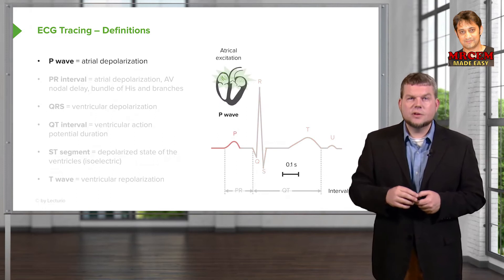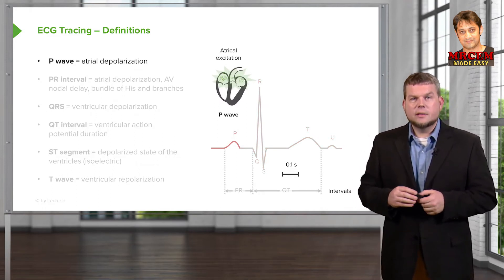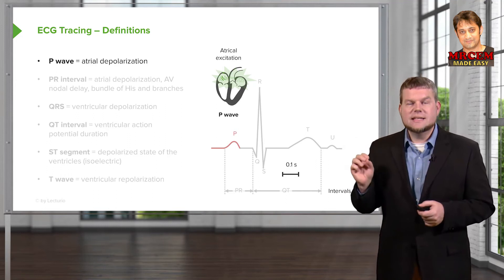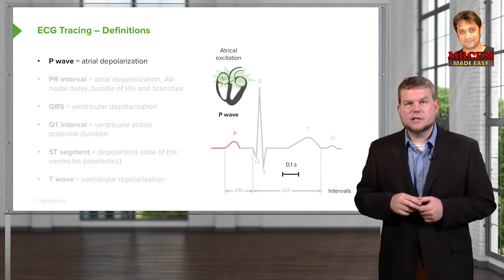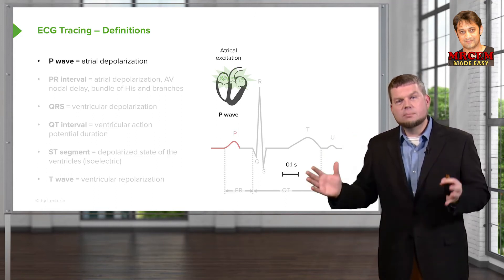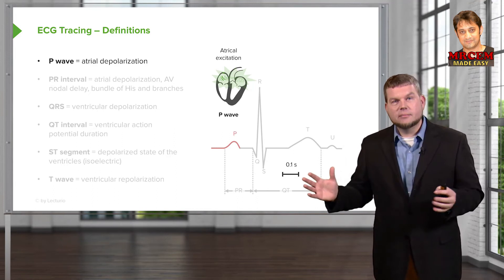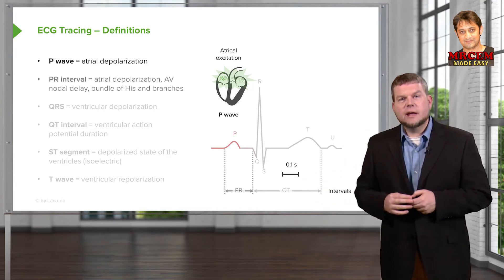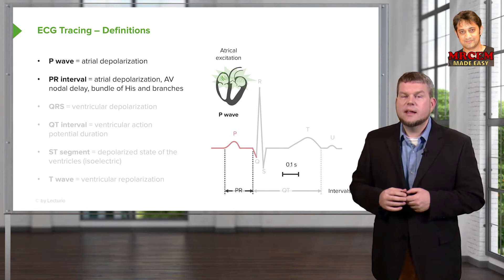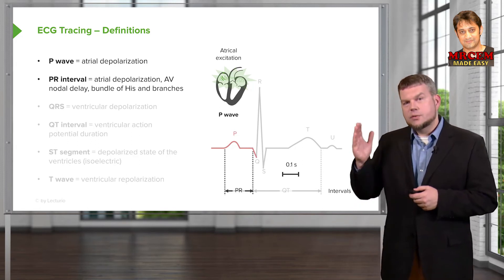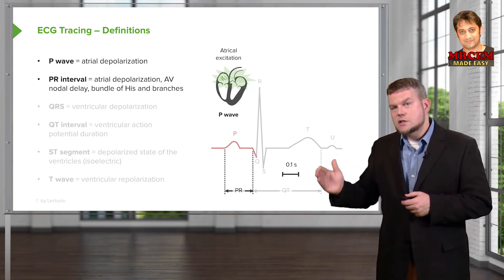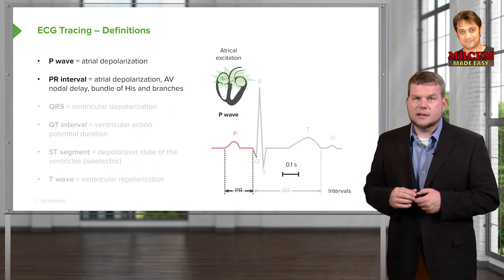The first is the P wave. The P wave corresponds to atrial depolarization — that's the top part of the heart depolarizing. The next thing we have is called the PR interval, and that goes from the start of the P wave to the start of the QRS complex.